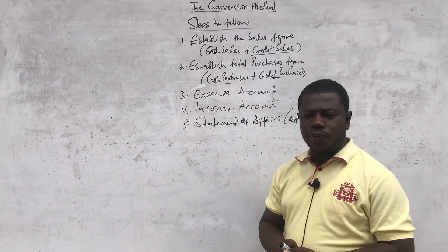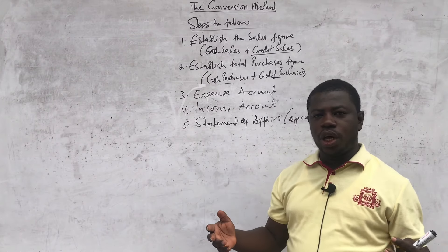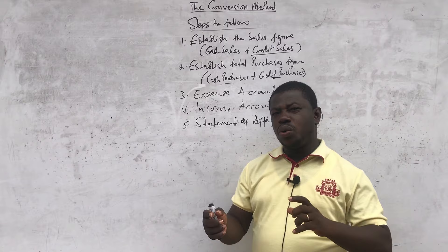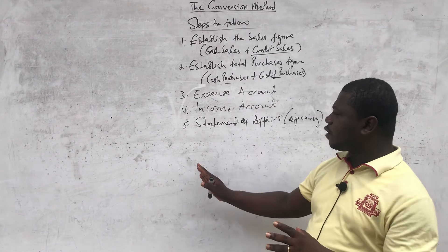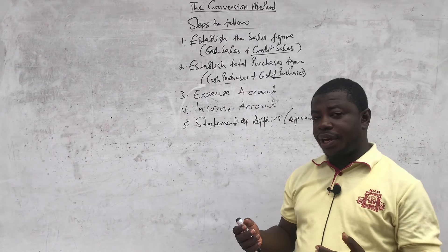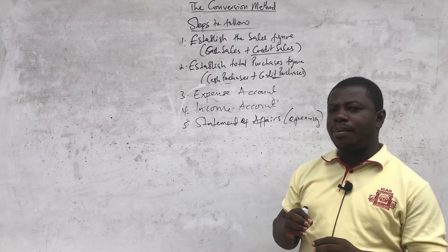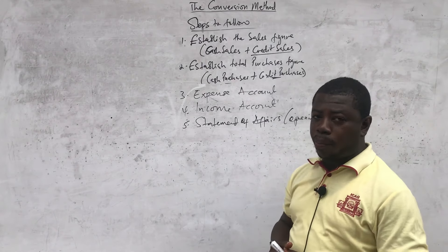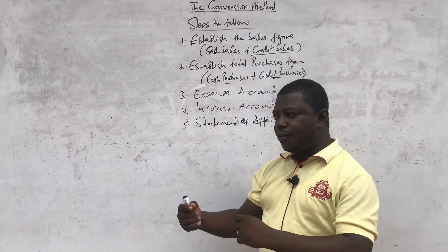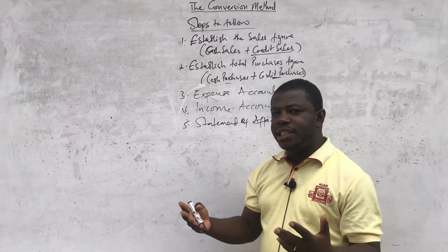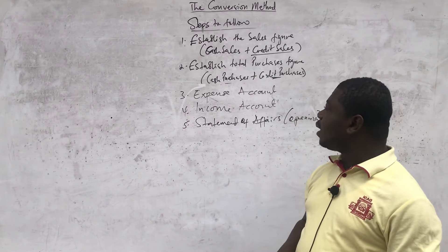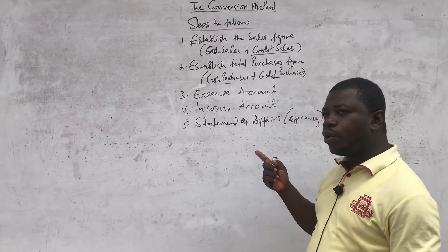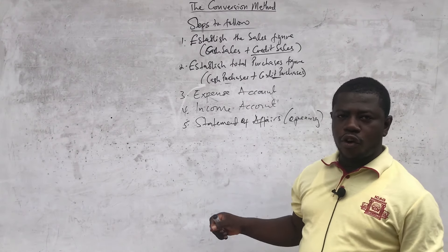Therefore, we prepare the opening statement of affairs to ascertain the opening capital, because the question may not give you a capital figure directly — instead it gives you a list of assets and liabilities at the beginning of the year. There could be other adjustments on the statement of financial position, for example a cash book that is not balanced, where you may need to re-prepare and balance the cash book to get your closing cash balance. These are the five key steps for the conversion method, and any other working will be dependent on the specific question.